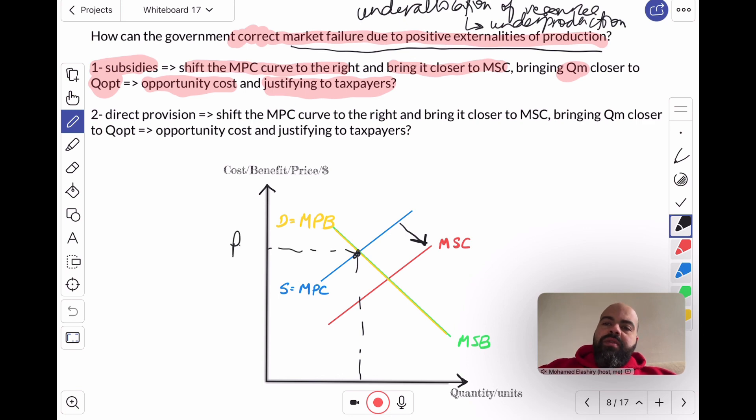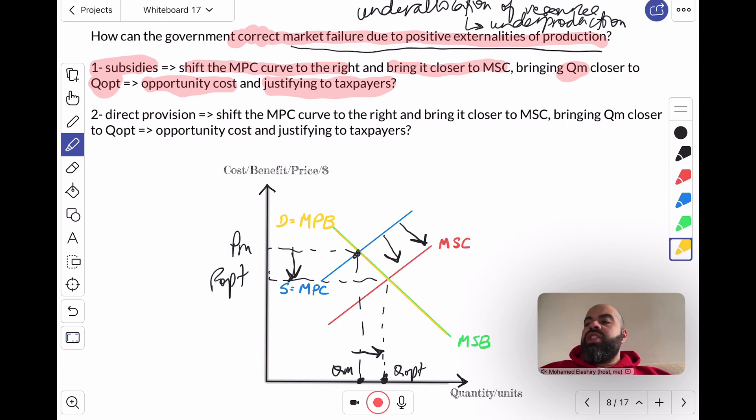Remember, MPC and MPB will give us PM and QM. And this will shift QM closer to QOpt. Shifting the MPC to the right, bringing it closer to MSC will also increase QM and bring it closer to QOpt, and hopefully lower the price and bring it closer to POpt. Another strategy that the government can use, which also has the same diagram,